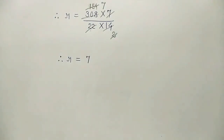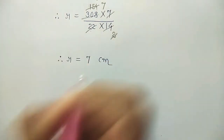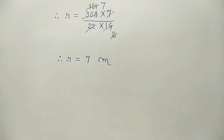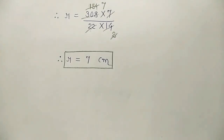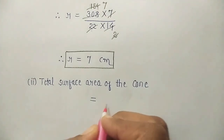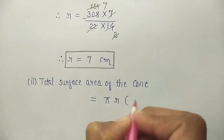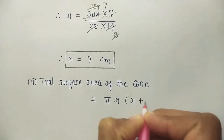The other measurements are in centimeters, so the radius r will also be in centimeters. So the radius is 7 centimeters. Now for the second part, we have to find the total surface area of the cone. We'll use the formula: total surface area of the cone equals pi r in bracket r plus l.